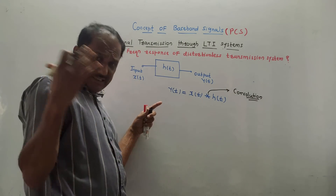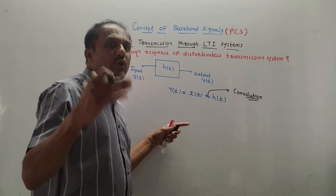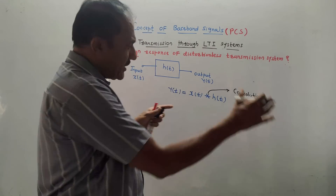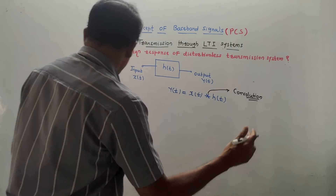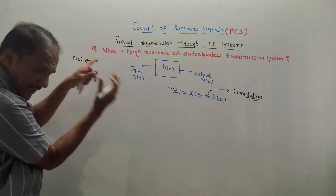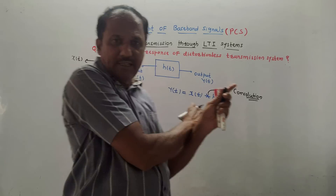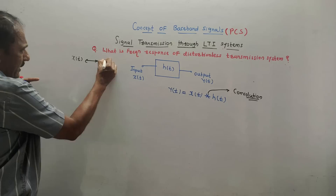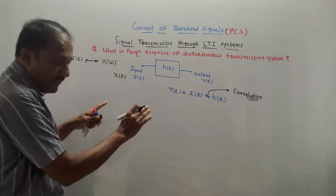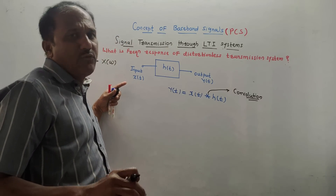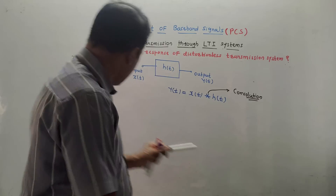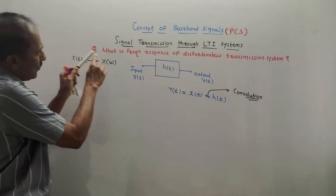All calculations in the subject PCS are done using Fourier transform. You don't have to study Fourier transform in detail; I will provide the required things for calculation. If you have any signal X(t), its Fourier transform is denoted by X(ω) with a bidirectional arrow, because you can also convert back using the inverse Fourier transform.